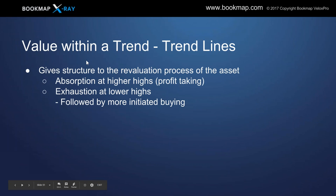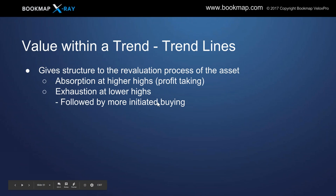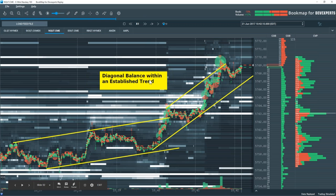What about value within a trend? We're going to look at balance within the trending environment. We originally spoke about it being an imbalance, but there is something to this — that's how you get your trend lines. It gives structure to that re-evaluation process of the asset. Absorption at the higher highs, profit taking, then exhaustion at the lower highs, followed by more initiated buying. That's where you get your trend lines and channeling — your diagonal balance within an established trend. You can see how this imbalance here re-establishes that trend.